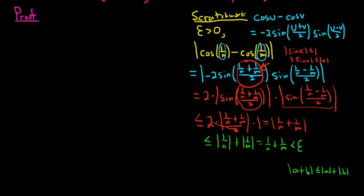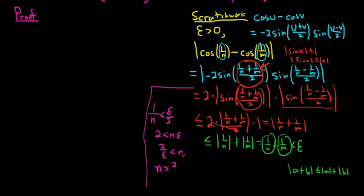And we want this to be less than epsilon. So now the natural thing to do is to force this to be less than epsilon over 2 and to force this to be less than epsilon over 2. And we can certainly do that. Here's how. You just force it. So 1 over n less than epsilon over 2. Then you just solve for n. So cross-multiply, you get 2 less than n epsilon. Then divide by epsilon, so you get 2 over epsilon less than n. Reading that backwards, it says n is bigger than 2 over epsilon.